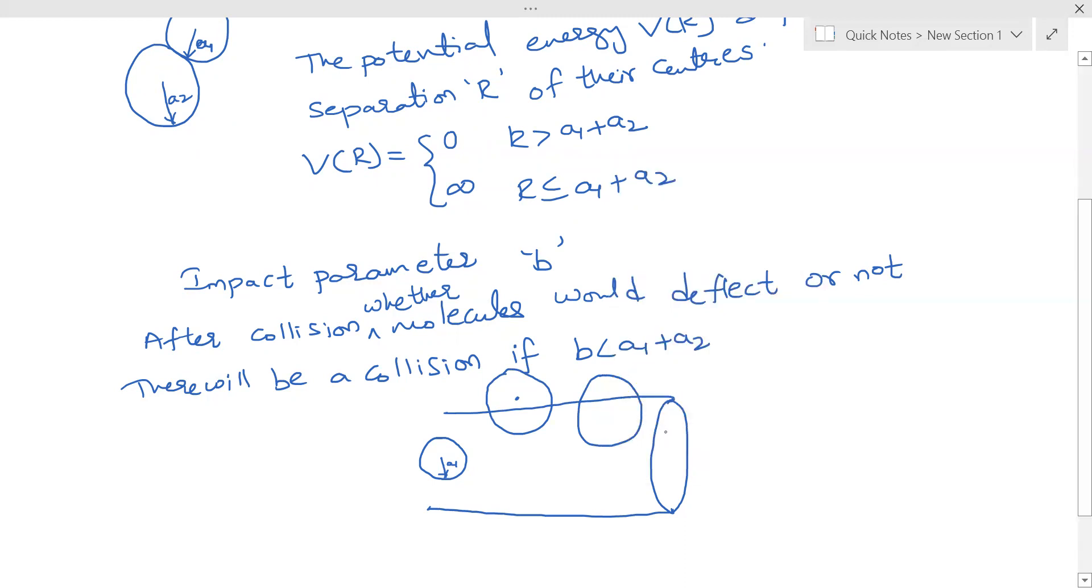This cylindrical tube is just an imaginary one we are drawing. At an instant where the molecules are present like this, the cylindrical tube is imaginary, but these molecules are like A, molecule B, and molecule C.